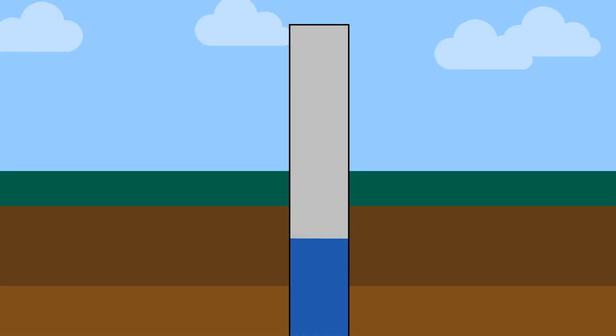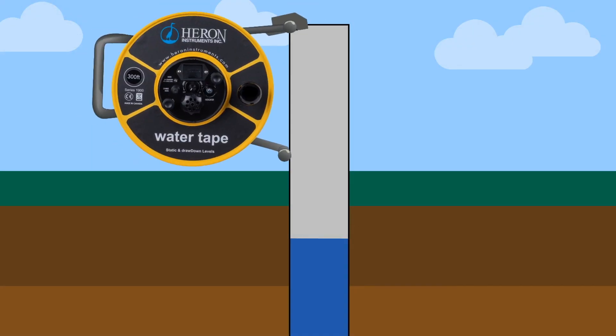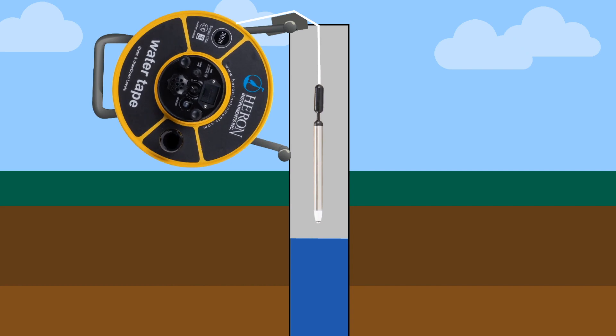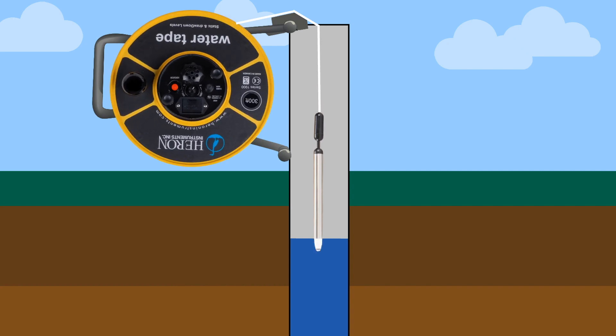When you are in the field, hang the unit on the side of the casing. Then run the tape over the tape guide and not on the edge of the well casing. Lower the probe into the well, the unit will start to sound on contact with water and the LED lights will turn on. The reading on the tape will provide you with the static water level.